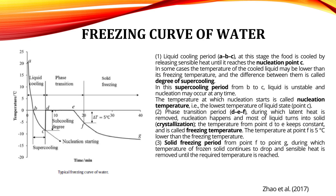A to B on the freezing curve is the liquid cooling period where sensible heat is released until the nucleation point C is reached. Nucleation is the first and most important step in ice crystal formation in the freezing process. The temperature of the cooled liquid may be lower than the freezing point — this is called the degree of supercooling. During the phase transition period, latent heat is removed so liquid changes to solid, and nucleation and ice formation occur simultaneously — this is called crystallization. The temperature from D to E is constant, called the freezing temperature. From F to G is the solid freezing period where sensible heat is removed and temperature continues to drop to the required level.